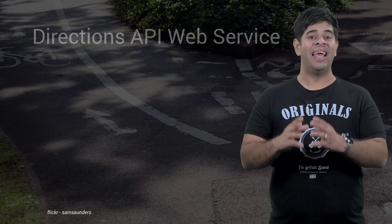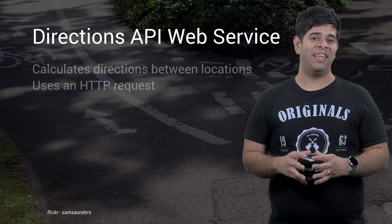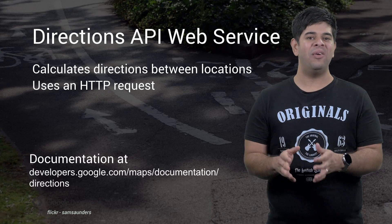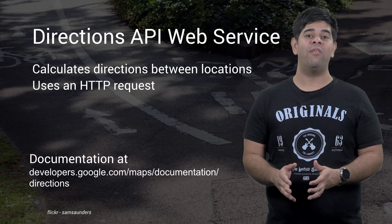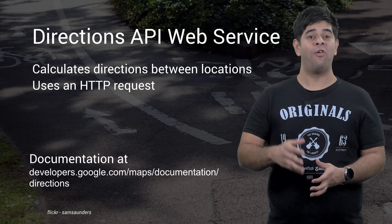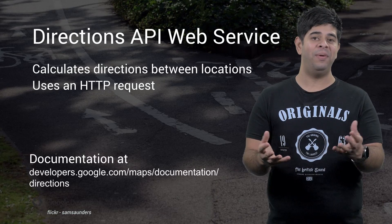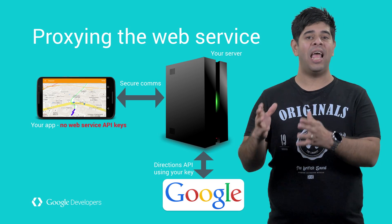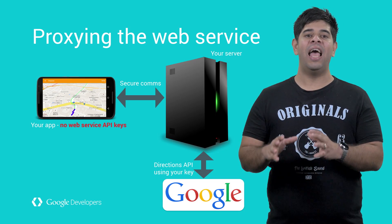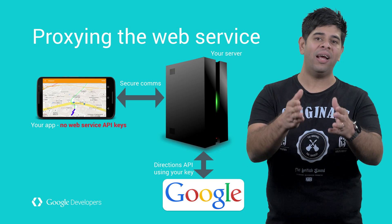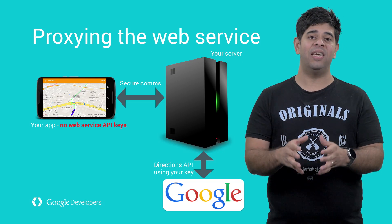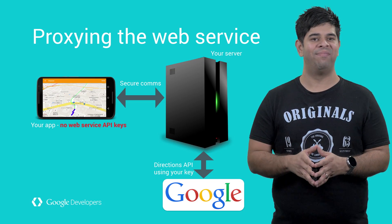Are you using the Directions API? It's a big revelation, so let me tell you more about it. The Directions API web service provides step-by-step directions from point A to point B. Being a web service, it's protected by an API key, and thus should not be consumed directly in your mobile app. Proxy it via your server, as shown here.